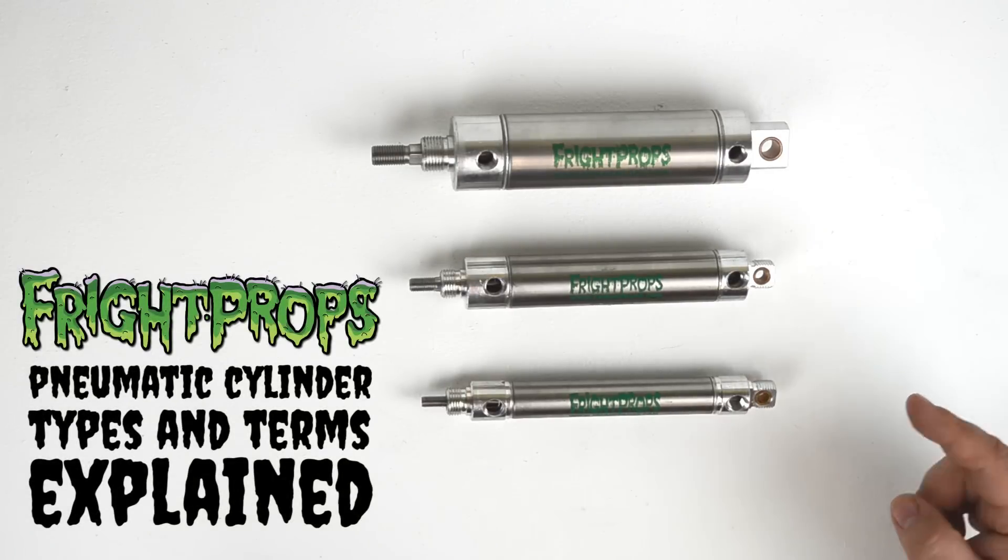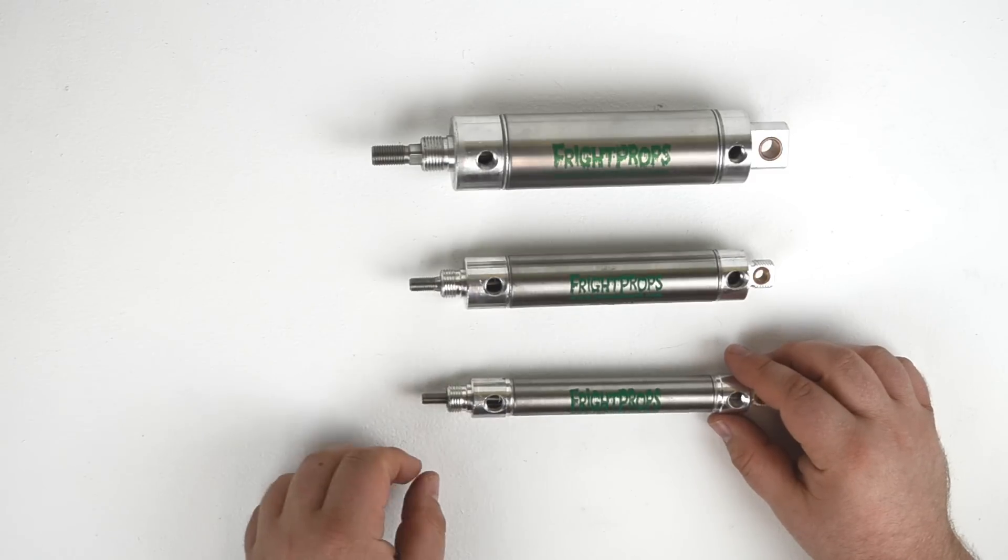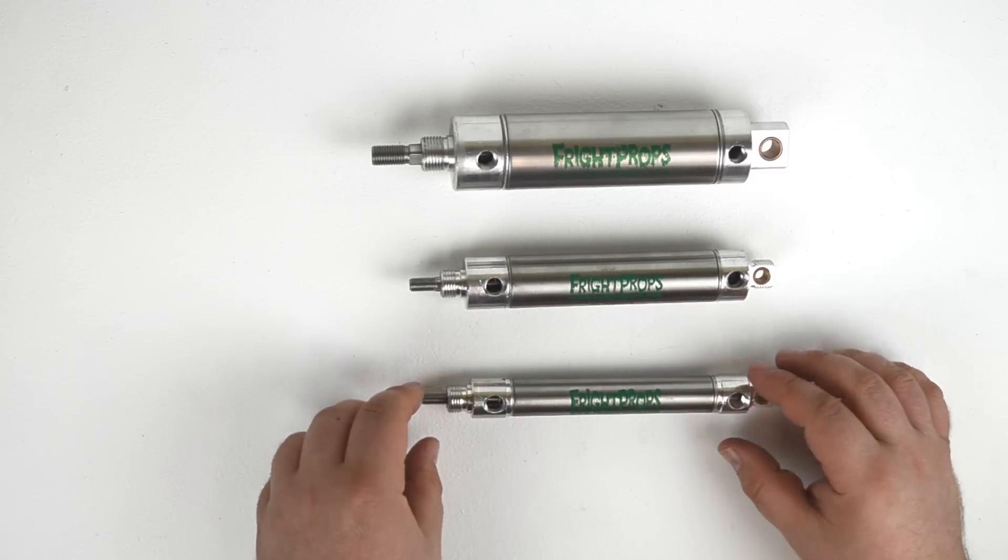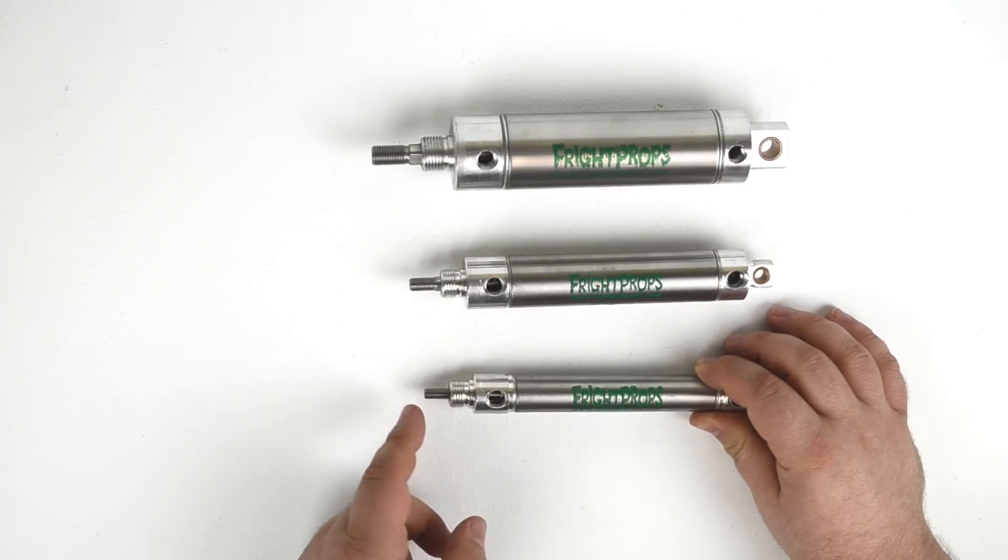Hey guys, Scott from Fry Props here and today we're going to be talking about cylinders. A cylinder is a pneumatic component that allows you to create linear motion. Essentially, it uses the power of air to extend and often to retract a cylinder rod.